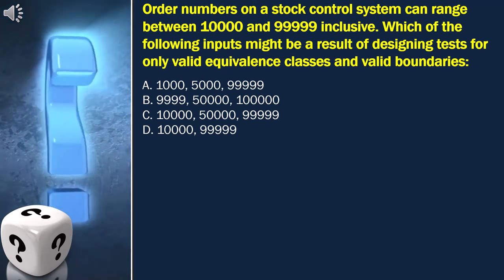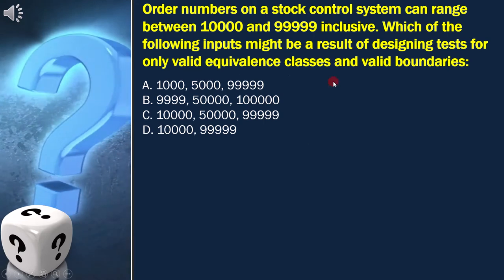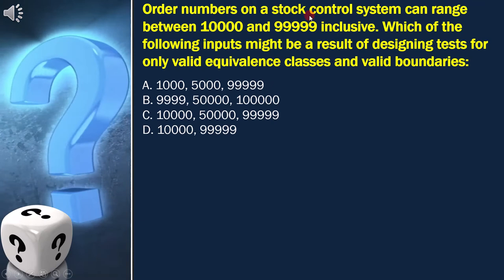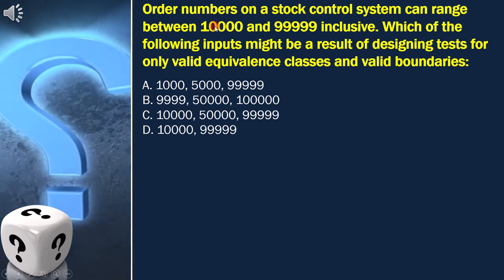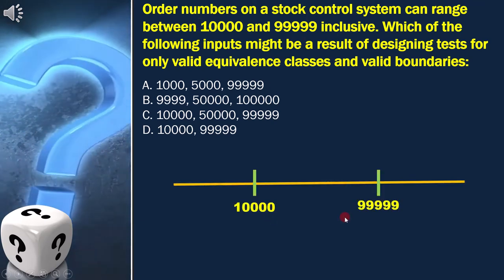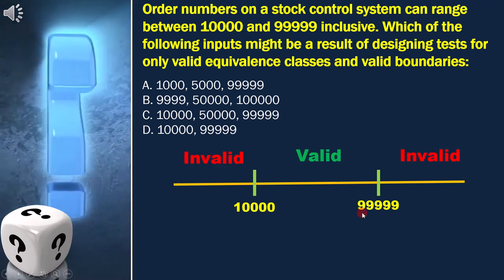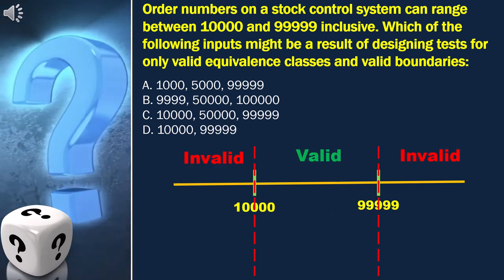And these are the options. Now let's draw the boundary value analysis diagram. It's clearly mentioned 10,000 and 99,999 are the boundaries. And here we need to find out valid equivalence classes and valid boundaries.